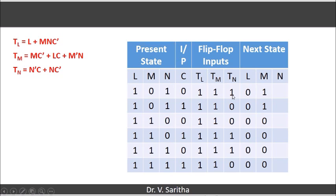So now when Tn is 1, it takes the complement of N. Here it is 1, so we will get 0. And Tn is 0 here, it is N. N is 1 here, so it preserves its state. So whenever Tn is 1, it complements the value of N from the present state in order to get the value of N in the next state. When Tn is equal to 0, then it preserves the present state as the next state.